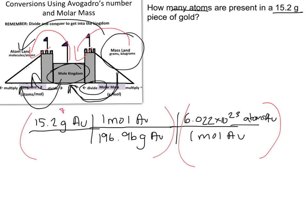what we're going to do is we're going to multiply 15.2 by 1, and then multiply it by 6.022 times 10 to the 23rd. That answer is then going to get divided by the 196.96 times 1.